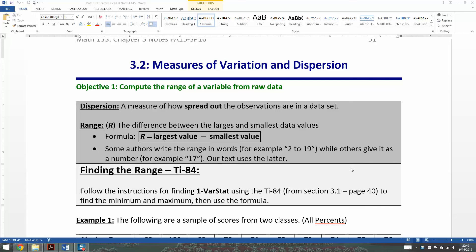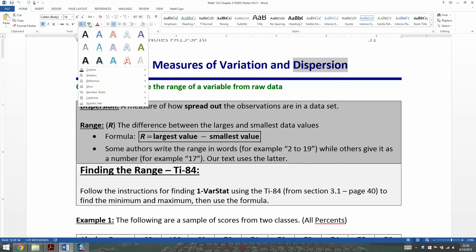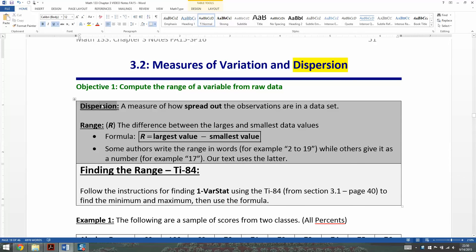We start off with the most basic measure of variation, which is the range. Before we get into that, let's talk about the word dispersion for a second. Dispersion is a fancy word for spread, or spread out. It's how spread out your data is. The more disperse, the more spread out the data points are.